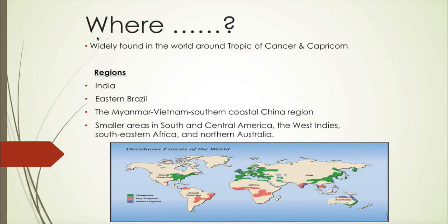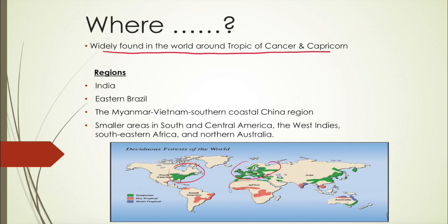Tropical deciduous forests are mainly found in the region around the Tropic of Cancer and Tropic of Capricorn. Looking at the map, these places are marked in green and orange. The main regions where they are found include India.